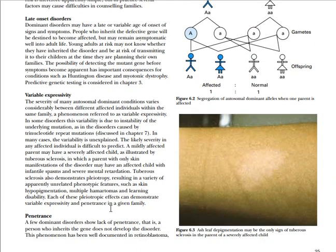Within autosomal dominant inheritance, we have two important concepts: variable expressivity and penetrance. Variability means that you have the autosomal dominant gene, but the degree of expression varies from person to person. In other words, variability is the variation in the degree of expression of a genetic disease from person to person who have the same autosomal dominant gene.